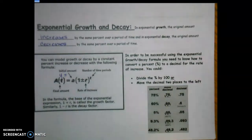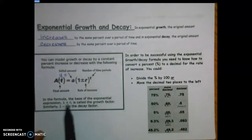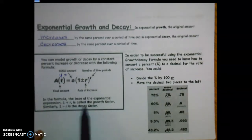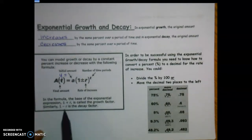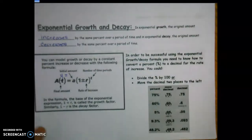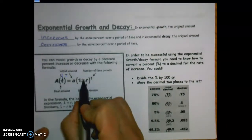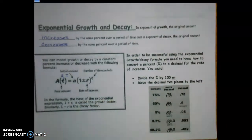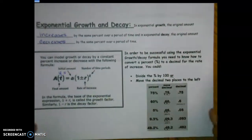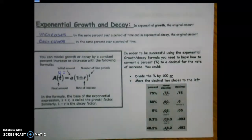So in the formula, 1 plus R is what we use when it's growth, and 1 minus R is what we use when it's decay. You have to decide whether it's going to be a plus or minus in order to plug into the formula.